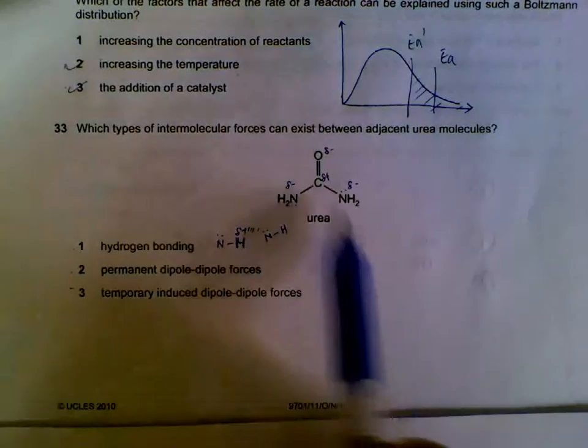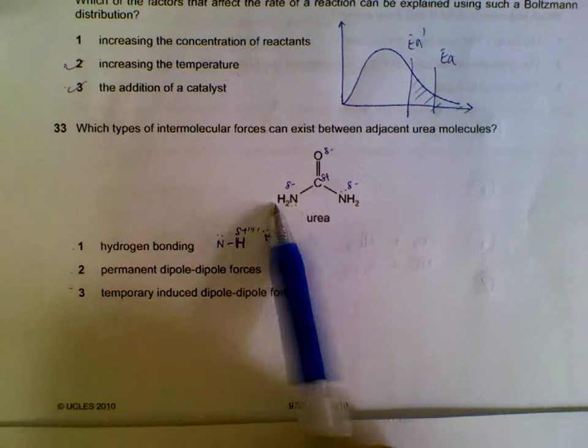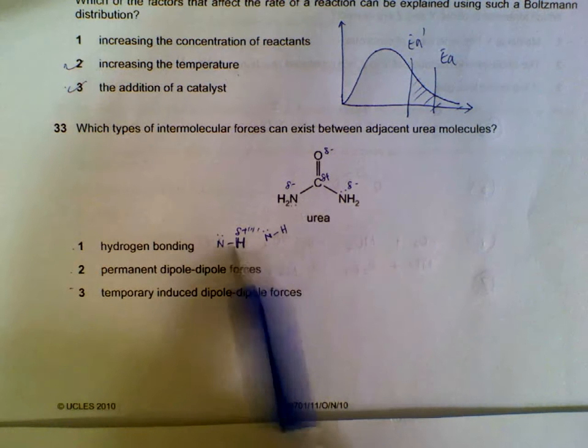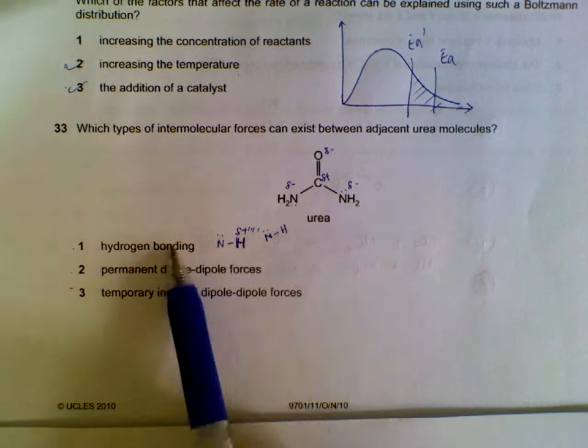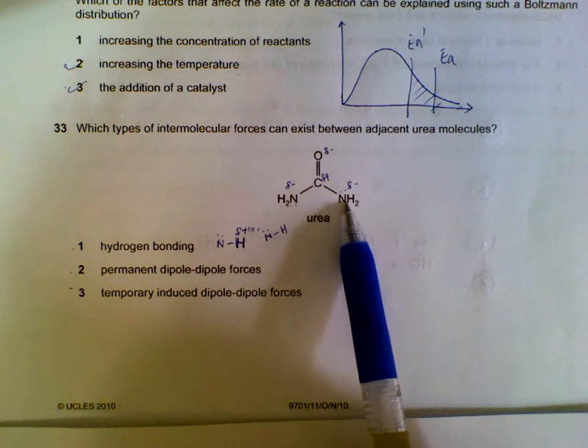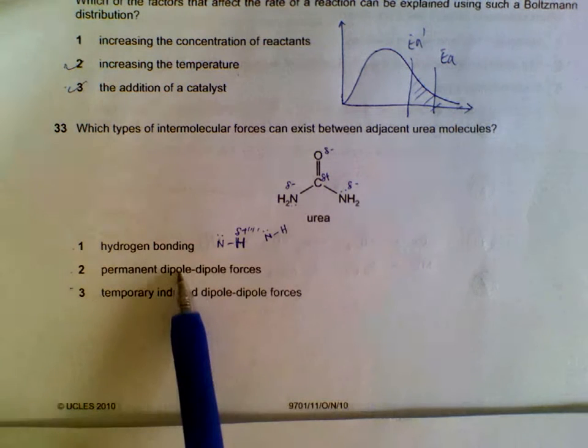Question 33. In this urea molecule, there's hydrogen attached directly to nitrogen, so we can expect hydrogen bonding. This is a polar molecule due to the electronegative atoms, so there's also permanent dipole-permanent dipole interactions.